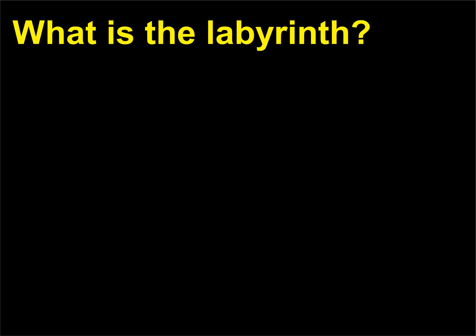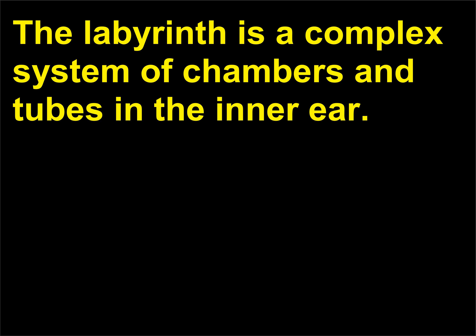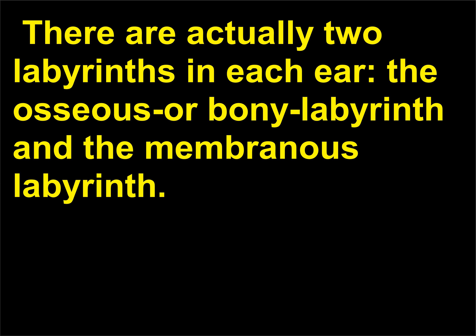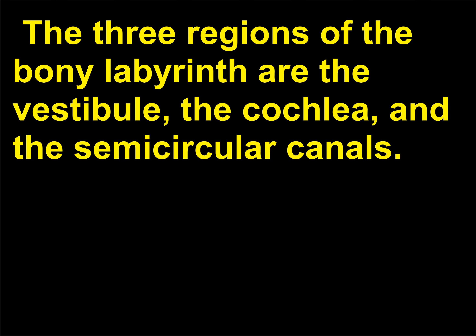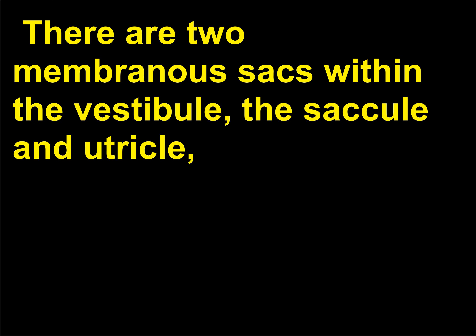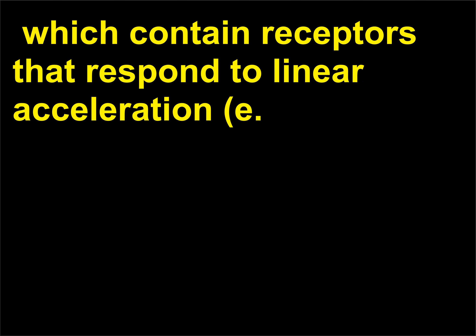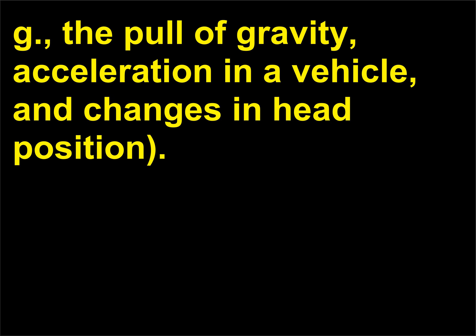What is the labyrinth? The labyrinth is a complex system of chambers and tubes in the inner ear. There are actually two labyrinths in each ear: the bony labyrinth and the membranous labyrinth. The three regions of the bony labyrinth are the vestibule, the cochlea, and the semicircular canals. Within the vestibule are two membranous sacs — the saccule and utricle — which contain receptors that respond to linear acceleration, e.g., the pull of gravity, acceleration in a vehicle, and changes in head position.